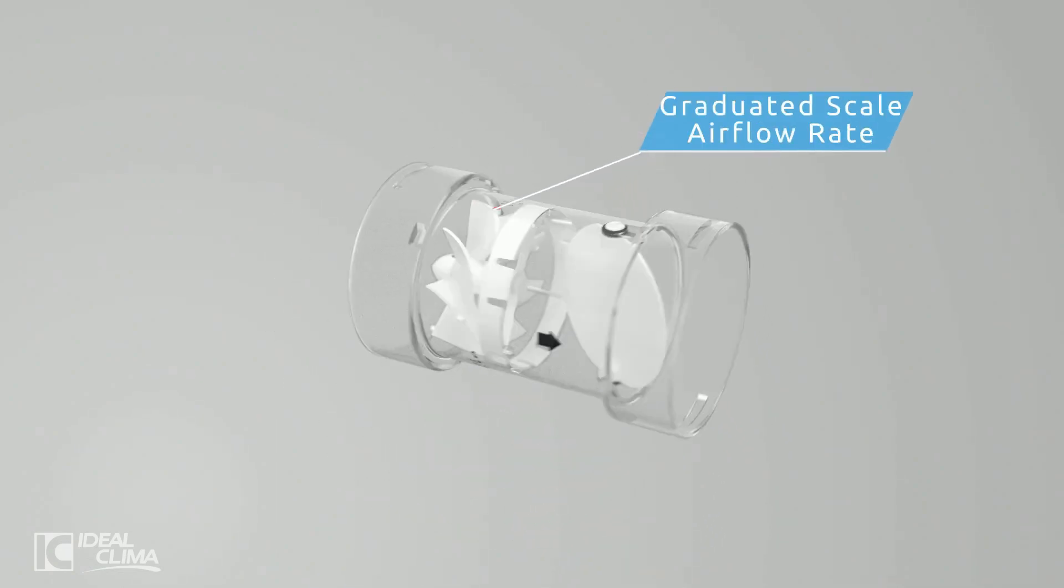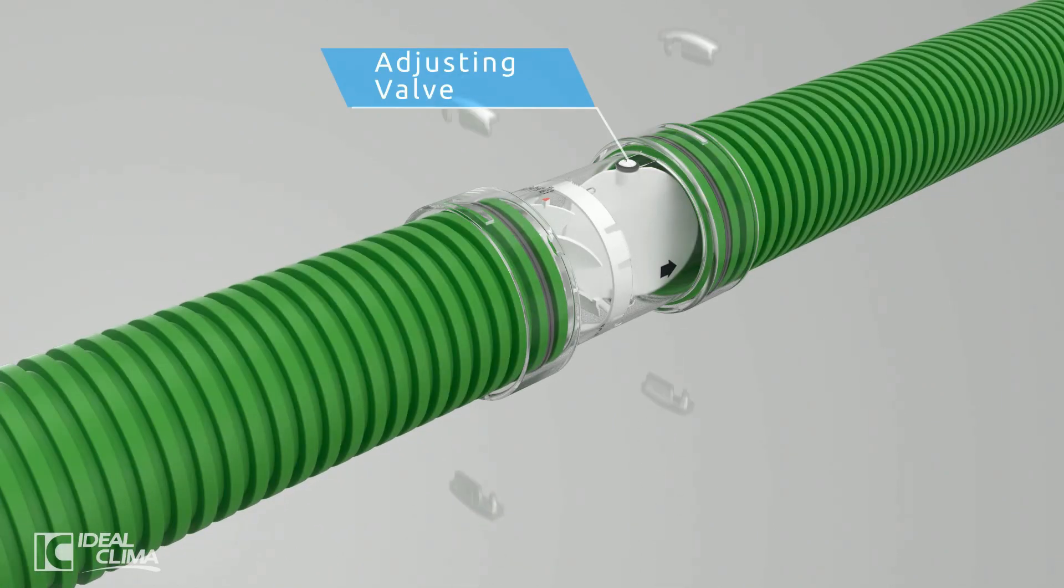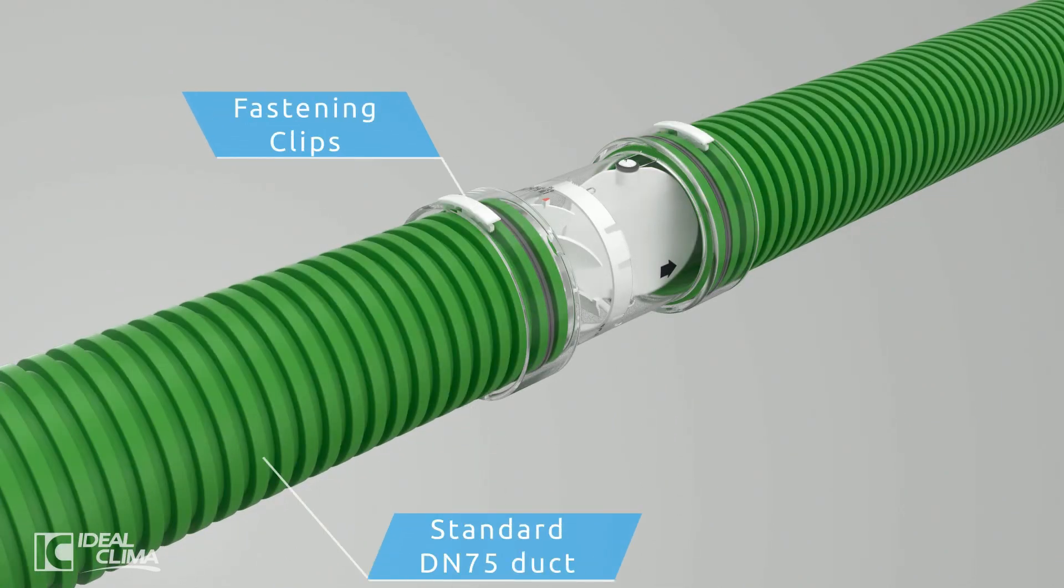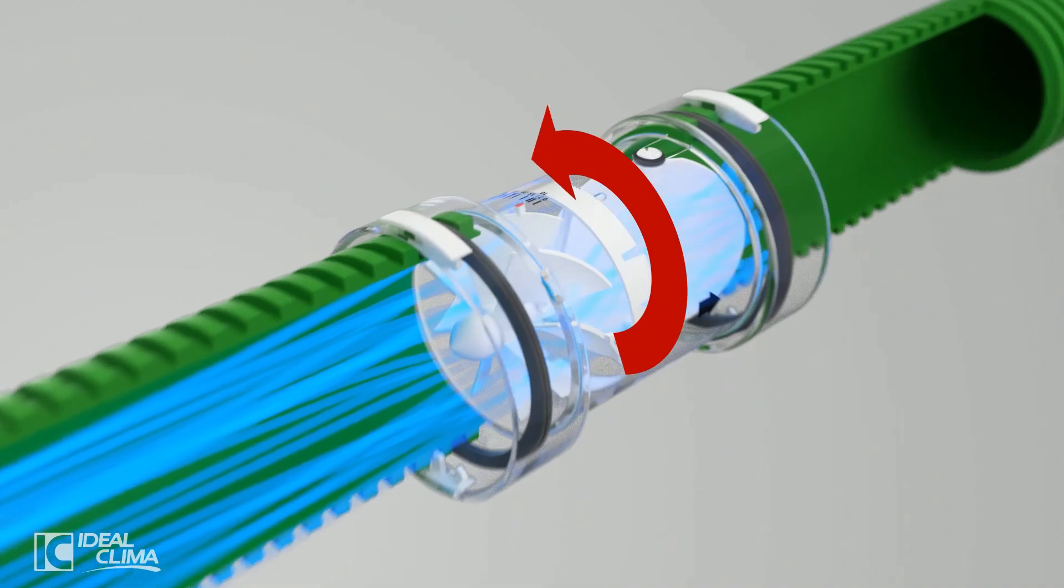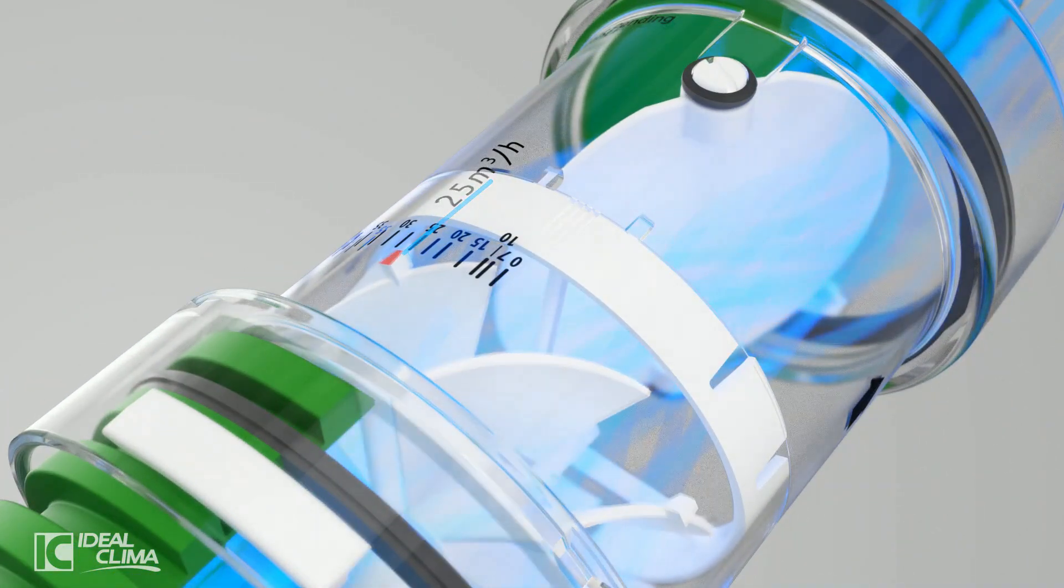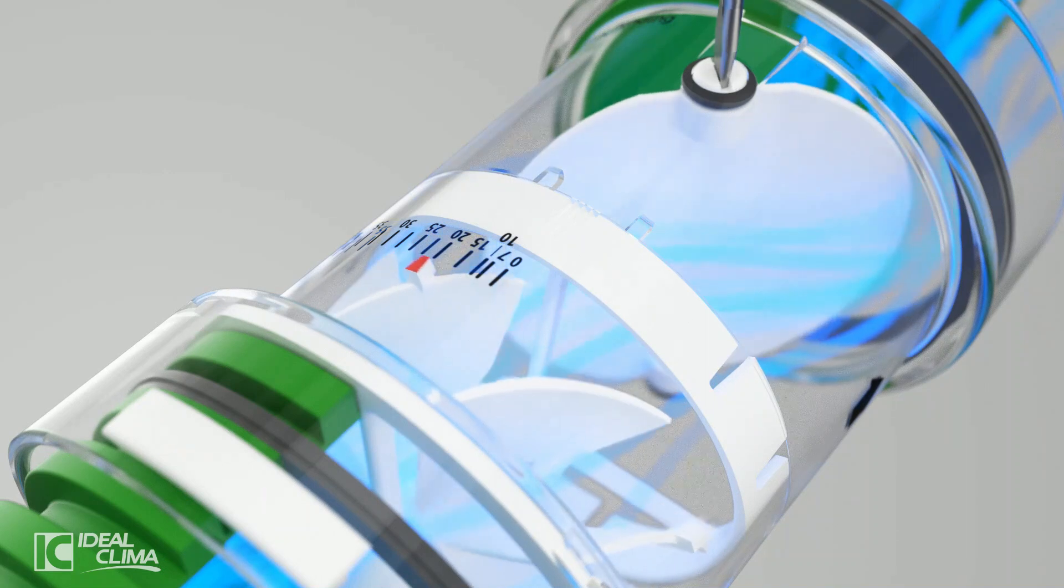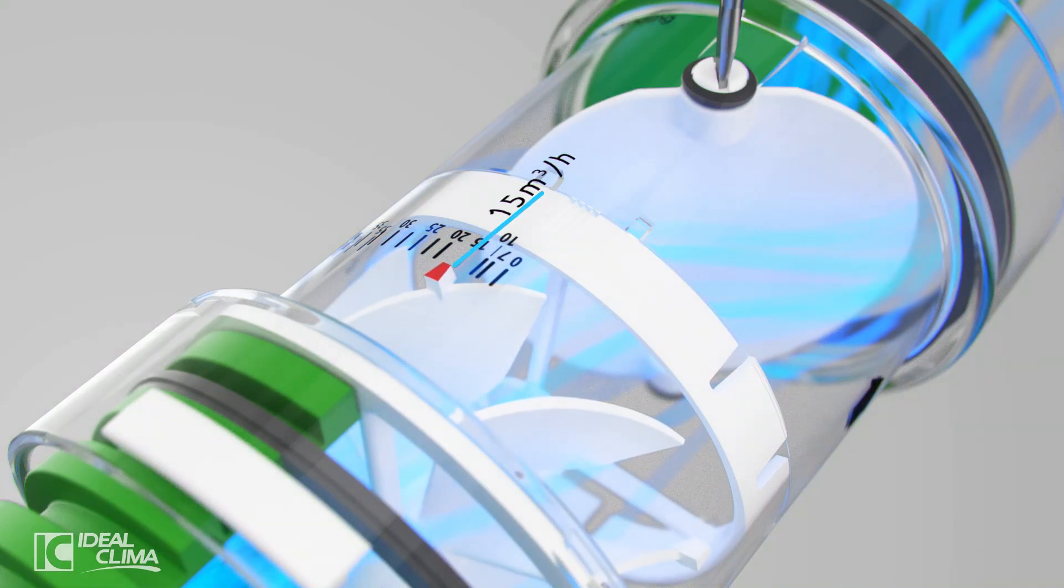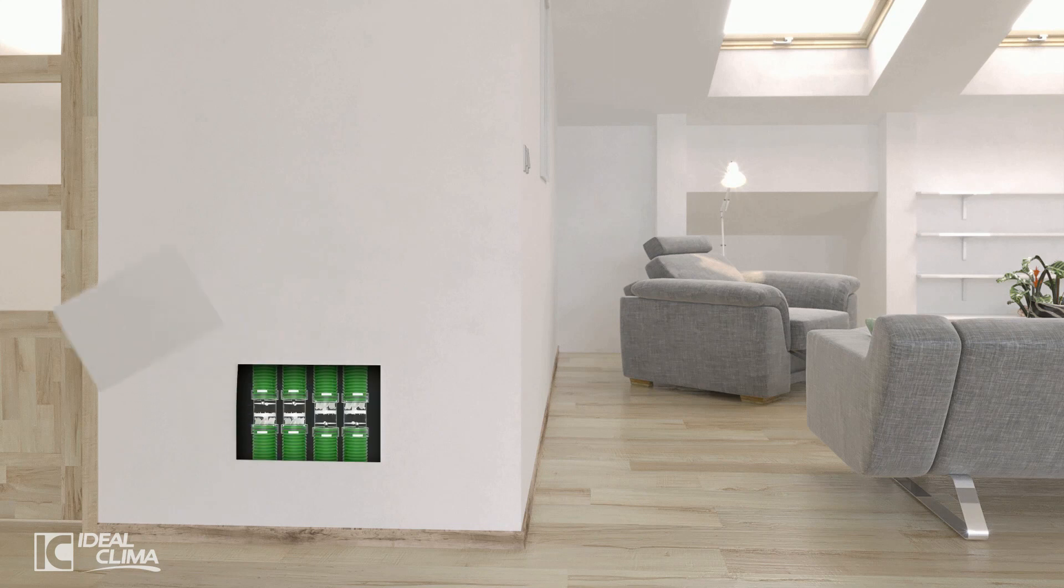MetroVent features a graduated scale and an adjustment butterfly valve. The fastening clips allow for secure and quick installation of MetroVent along the DN75 duct. The airflow moves the hand of the turbine along the scale, the displacement is proportional to the airflow in the duct, allowing a quick and clear reading. By rotating the embedded butterfly valve, the airflow can be quickly adjusted.